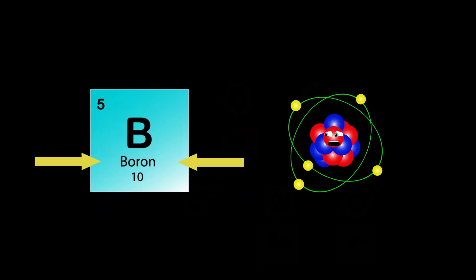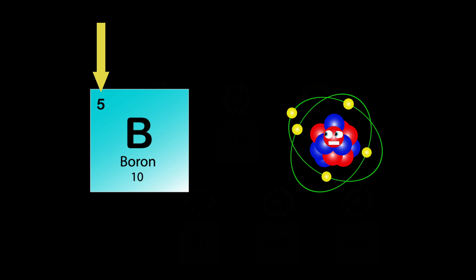My name is Boron, my atomic number is 5. My atomic mass is 10, B is my symbol as I thrive. I'm used in eyedrops and antiseptics. I'm put in tile glaze and in washing powders I am mixed.